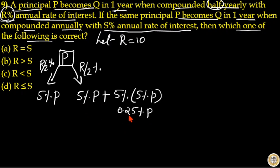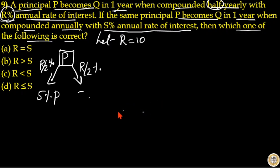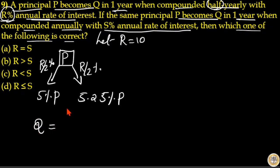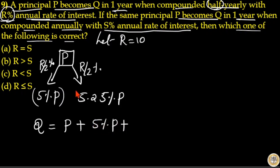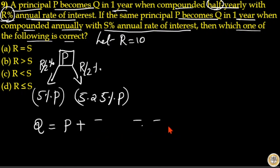Total for the next six months is 5.25 percentage of principal. So at the end of one year, the amount generated equals principal plus 5 percentage of principal for the first six months plus 5.25 percentage of principal for the next six months, giving a total of 10.25 percentage of principal as interest received. Amount generated is P plus 10.25 percentage of P.